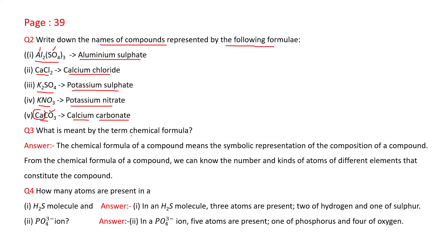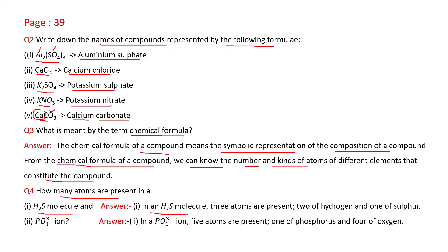What is meant by the term chemical formula? The chemical formula of a compound is the symbolic representation of the composition of a compound. From it we can know the number and kinds of atoms of different elements that constitute the compound. How many atoms are present in H₂S? Three atoms — two atoms of hydrogen and one atom of sulfur. In PO₄³⁻, there are five atoms total — one phosphorus and four oxygen.